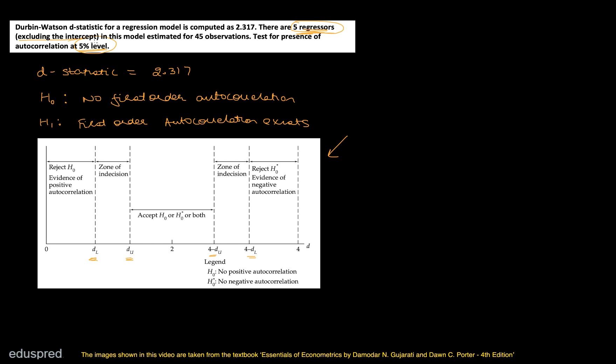One of the mistakes that many people do is that they think that K' is equal to the total number of parameters. So that means if you have a model like Y = beta0 + beta1x1 + beta2x2 + beta3x3 + beta4x4 + beta5x5 + error, then many students think that because there are six parameters, that means K' is going to be six. Well, that's wrong.